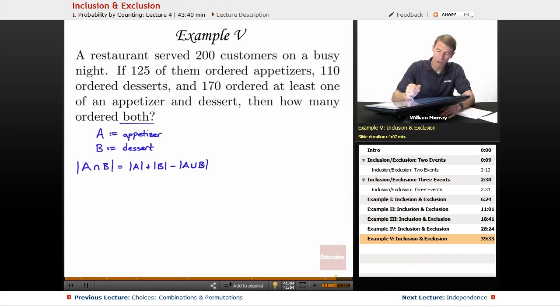And we can calculate all of these directly from the problem stem. A is the number of people who had appetizers, and it tells us that that's 125. B is the number of people who ordered desserts. There's 110 of them. But 170 people ordered at least one. That's the union right there. At least one means a union. So, we're going to subtract off 170 here.